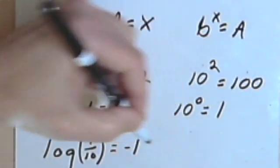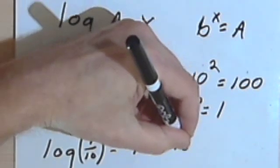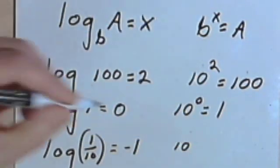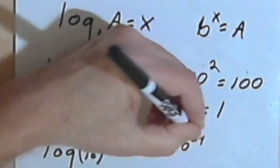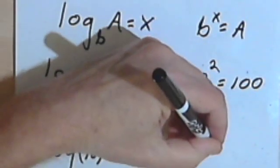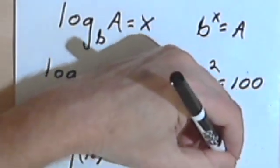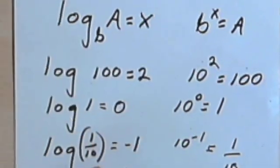Let's prove that that's true. So that means we're saying that 10 raised to the negative 1 power equals 1 over 10.